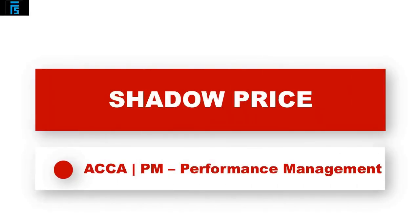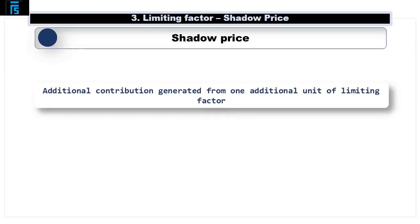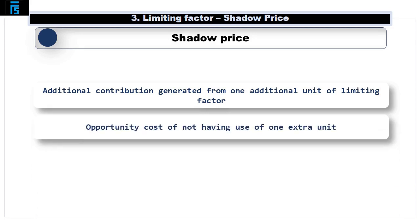In this session, we are going to think about how much extra a company would be willing to pay for one additional unit of scarce resources. The topic we will be covering in this video is all about shadow prices, which is an extension of limiting factor analysis as discussed in the previous two videos. A shadow price is the additional contribution generated from one additional unit of limiting factor — in other words, it is the opportunity cost of not having the use of one extra unit.